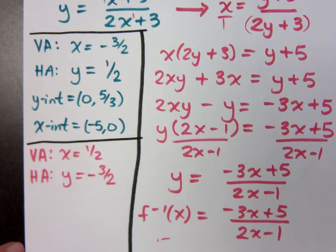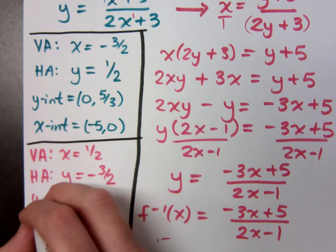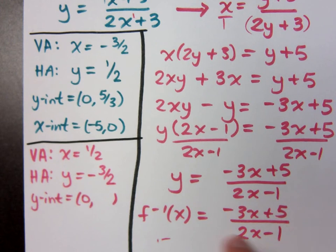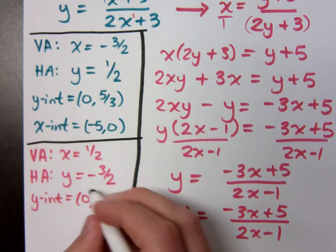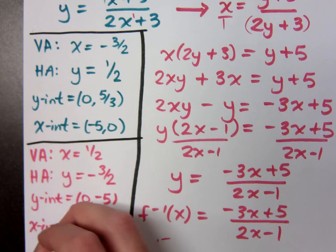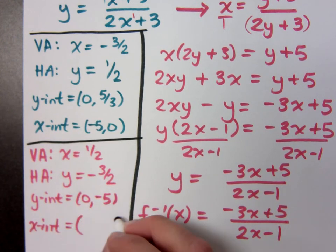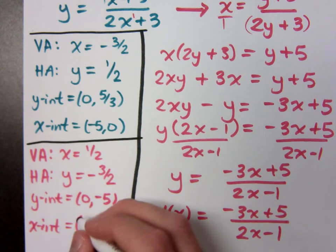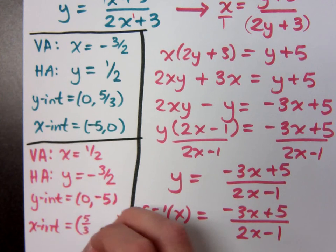For the y-intercept of the inverse: if I plug in 0, I get negative 5. And for the x-intercept — what makes this numerator equal to 0? — positive 5 thirds comma 0.